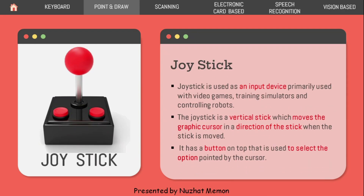The next device is the joystick. A joystick is an input device primarily used with video games, training simulators, and controlling robots. It is also used for pilot training. The joystick is a vertical stick which moves the graphic cursor in the direction the stick is moved. It has a button on the top used to select the option pointed by the cursor.